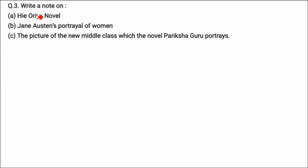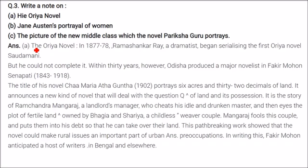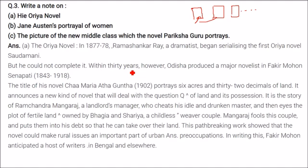A note on the Odia novel: in 1877–78, Ramashankar Ray, a dramatist, began serializing the first Odia novel. Serializing means one part of the content comes, leaving some suspense so readers wait for the next installment, like various serials. However, he could not complete it. Within 30 years, Odisha produced a major novelist in Fakir Mohan Senapati.